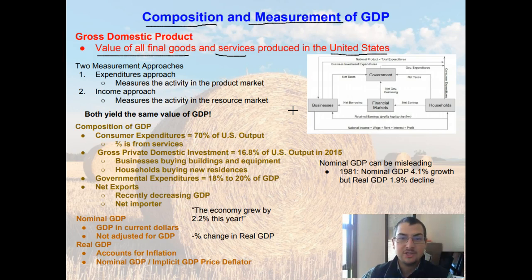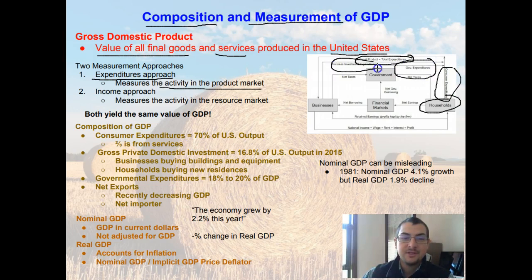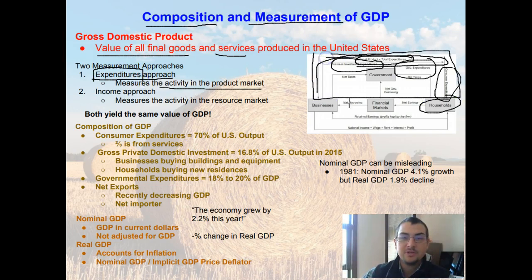Whenever we are looking at measuring GDP, we are looking at one of two approaches. We are either going to use the expenditure approach, which measures the activity in the product market — the goods flowing to the government and to the households — with consumer expenditures, government expenditures, and business investment expenditures all flowing in that direction. This approach measures how much money is being spent on final goods and services.